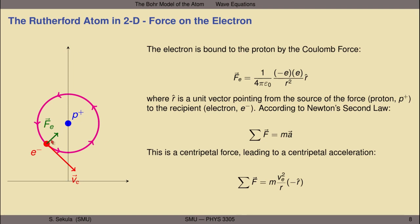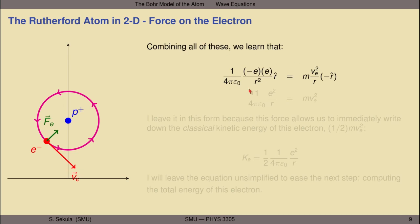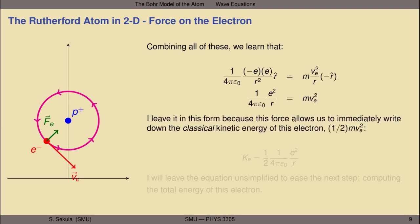We have all the pieces we need to build a Rutherford model of the atom in two dimensions. We can set the sum of the forces, which is just the Coulomb force, equal to the mass times the centripetal acceleration. Note that negative r-hat appears on both sides and drops out of the entire equation. We're left with: 1 over 4πε₀ times e² over r is equal to the mass of the electron times the velocity of the electron squared. I'm leaving it in this form because it almost instantly lets us write down the classical kinetic energy of this electron — that is, ½mv². If I multiply this equation by ½, I immediately get the kinetic energy of this electron going in orbit around the central proton: ½ times 1 over 4πε₀ times e² over r.